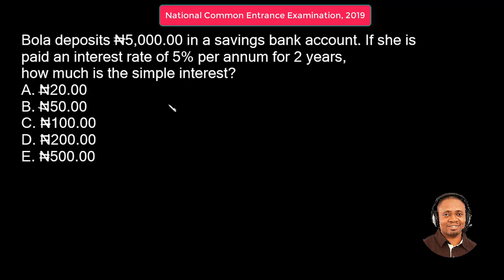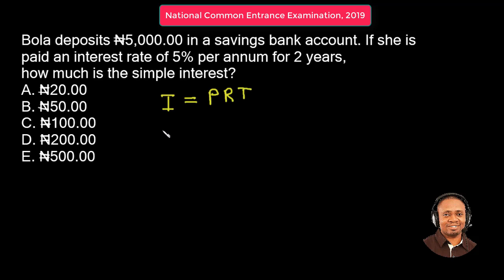Remember the simple interest formula. I stands for simple interest. P stands for the principal, R stands for the rate, and T stands for the time.